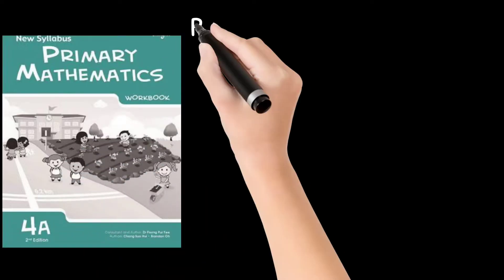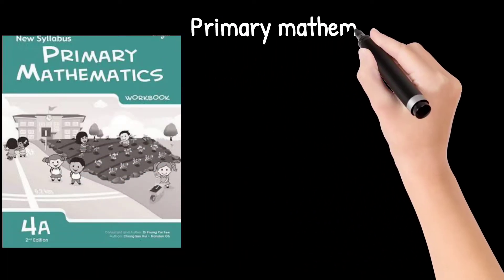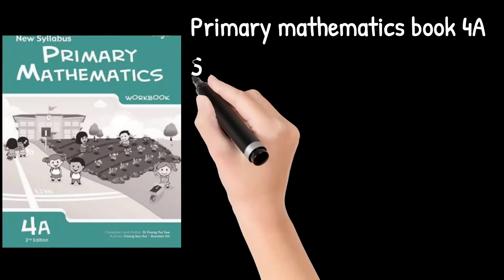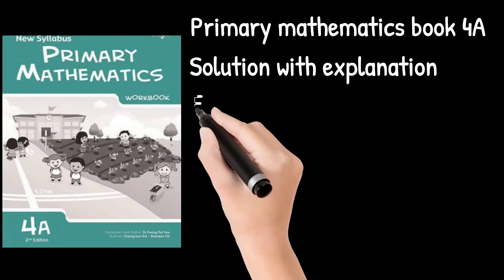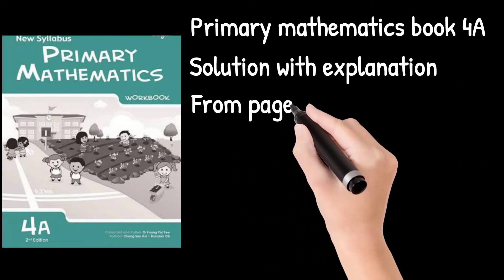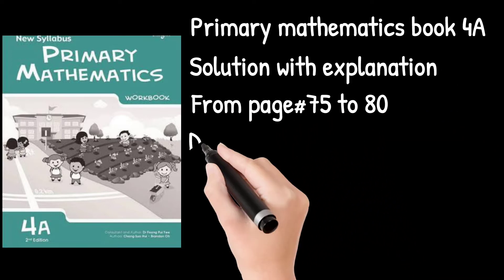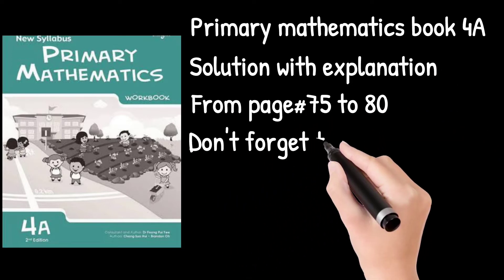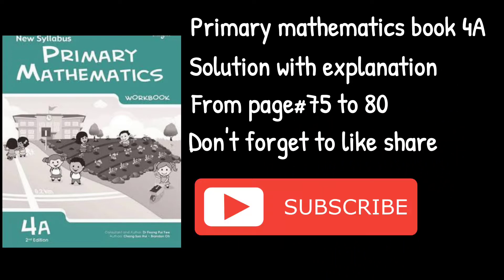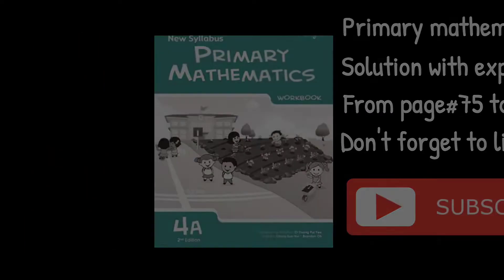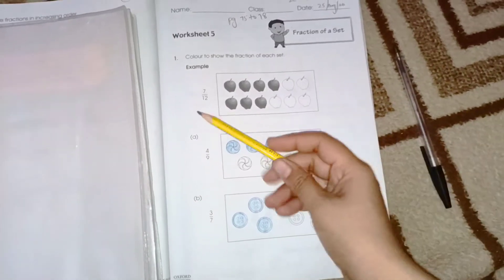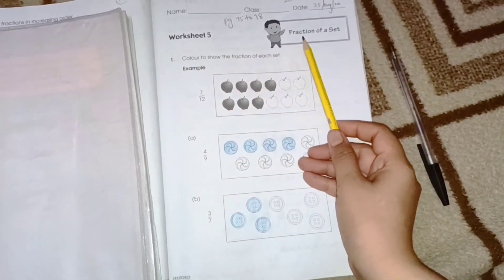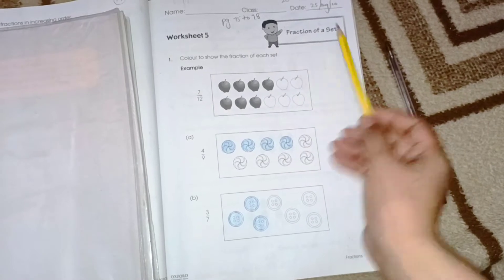Hi everyone. Today we are going to solve Primary Mathematics Book 4A from page number 75 to 80. Page number 75, Worksheet number 5: Fraction of a set.